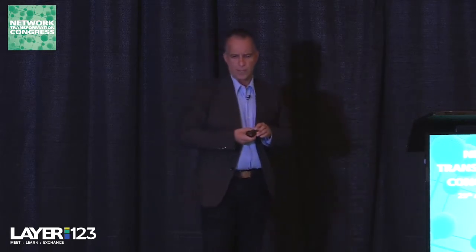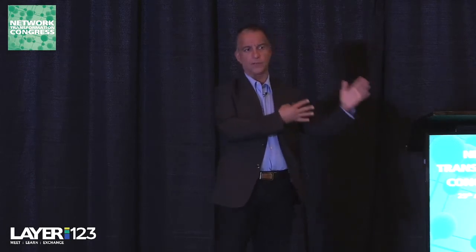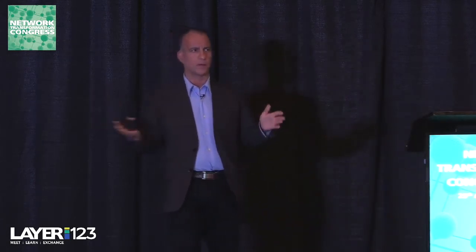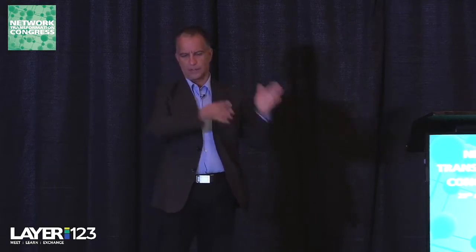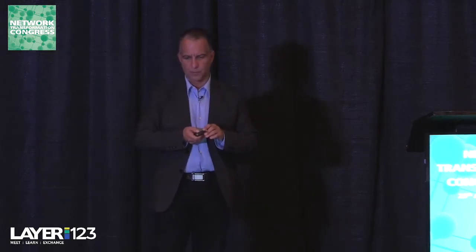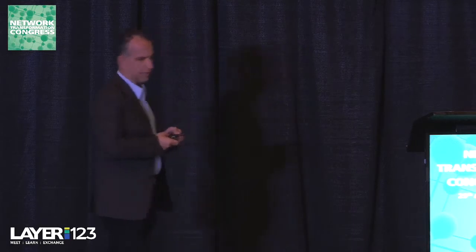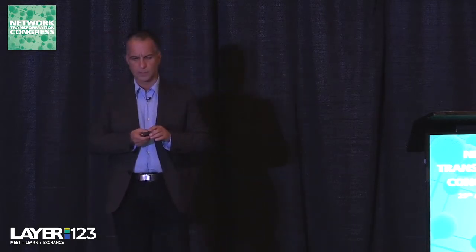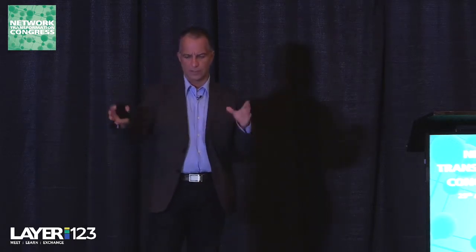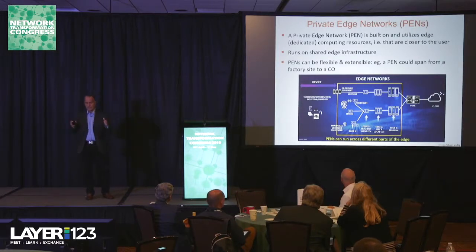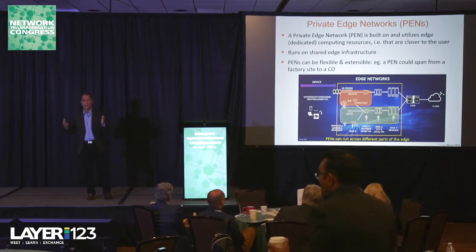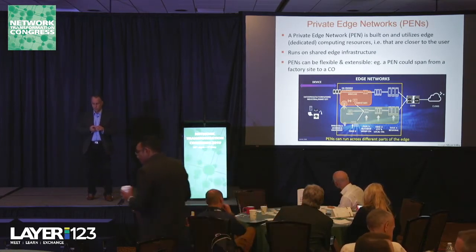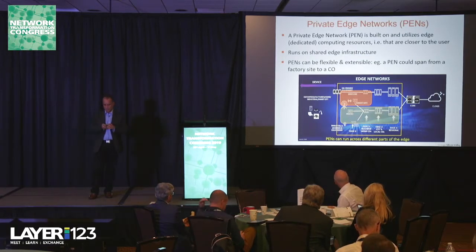These private edge networks can be flexible and extensible, spanning from the factory floor — if that's your definition of edge — all the way to the central office and perhaps the point of presence. It doesn't really matter; it depends on your specific use case. Intel has a great depiction of edge networks showing different flavors: the access layer, the central office, or the PoP. It's up to the enterprise customer to choose and decide how they want to build that private edge network.